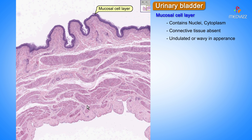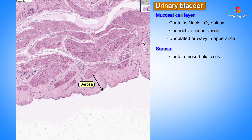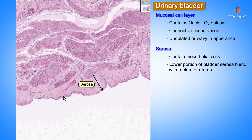The smooth muscle bundles are arranged for detruzing or squeezing out the urine, which is why it's also called the detrusor muscle. Notice we have some connective tissue out here, and notice that the top part of the bladder, or the superior part, is covered by serosa, so you may very likely find some mesothelial cells along here. Otherwise, the lower portions of the bladder kind of blend in with either the rectum or the uterus, and you're not likely to see any serosa in the inferior portions of the bladder.